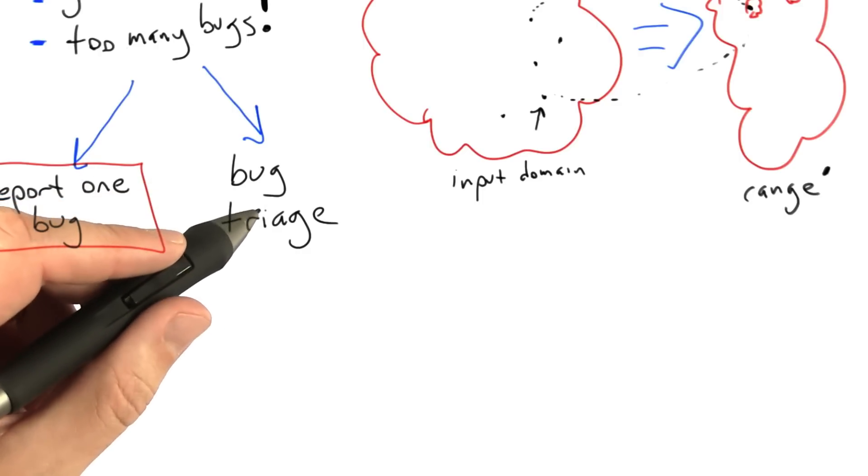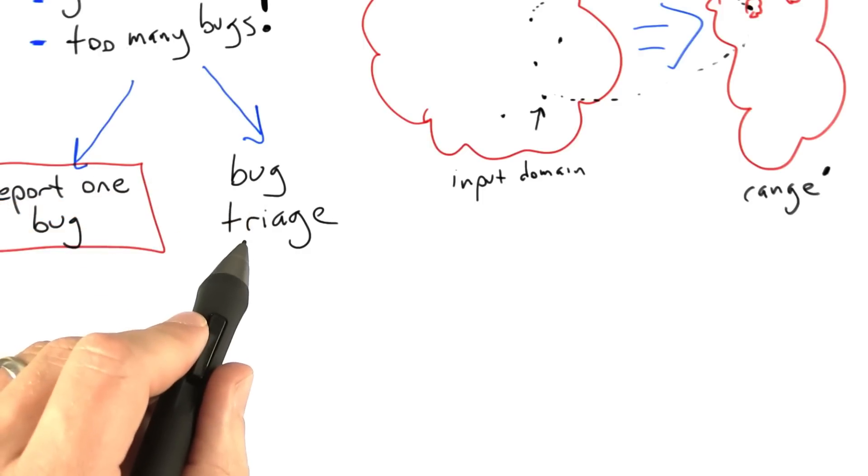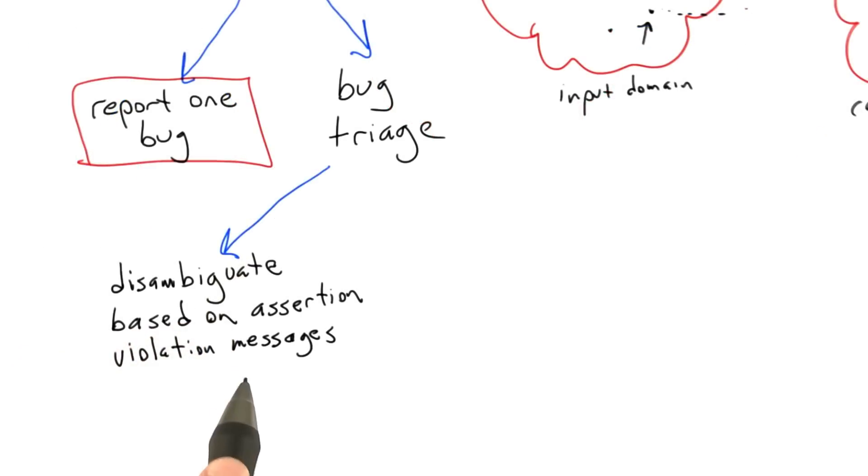In the easiest possible case, the bugs are causing assertion violation messages. One thing we can do is disambiguate based on assertion violations. You look at the text of the assertion violation messages and assume that distinct assertion violation messages are caused by distinct bugs in the software under test.